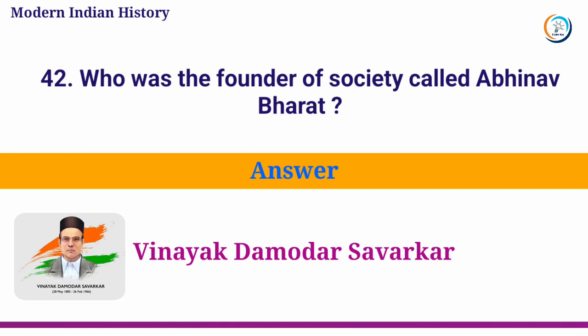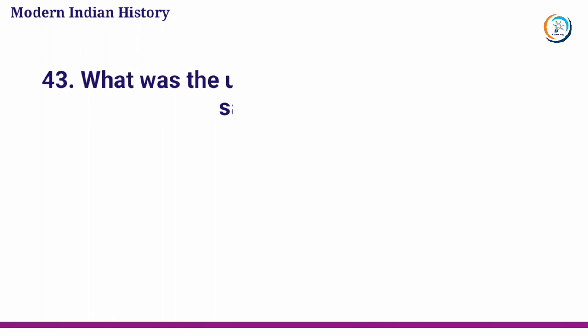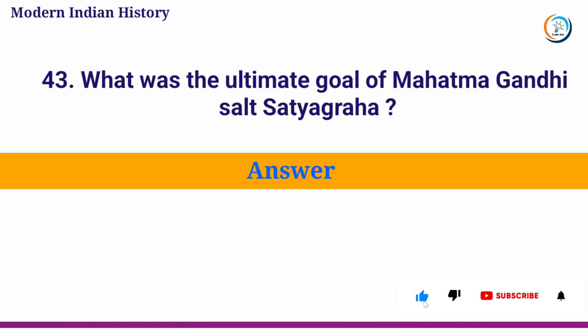What was the ultimate goal of Mahatma Gandhi's Salt Satyagraha? Answer: Purna Swaraj for India.